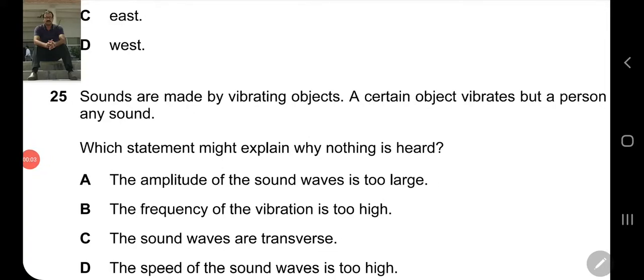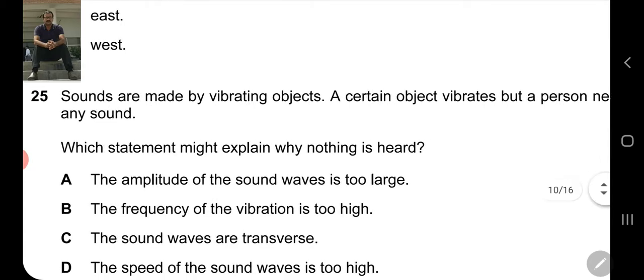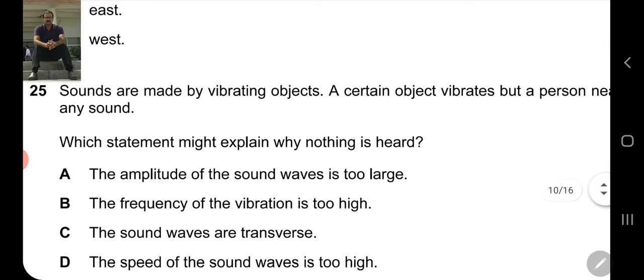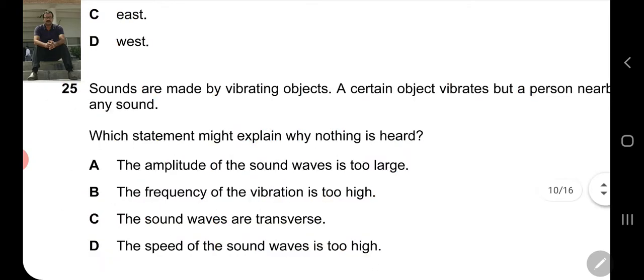Bismillahirrahmanirrahim. Students, question number 25 MCQ: Sounds are made by vibrating objects. A certain object vibrates but a person nearby cannot hear any sound. Which statement might explain why nothing is heard? Option A: The amplitude of the sound wave is too large. If the loudness is high, then the person should be able to hear it, so option A is not possible.